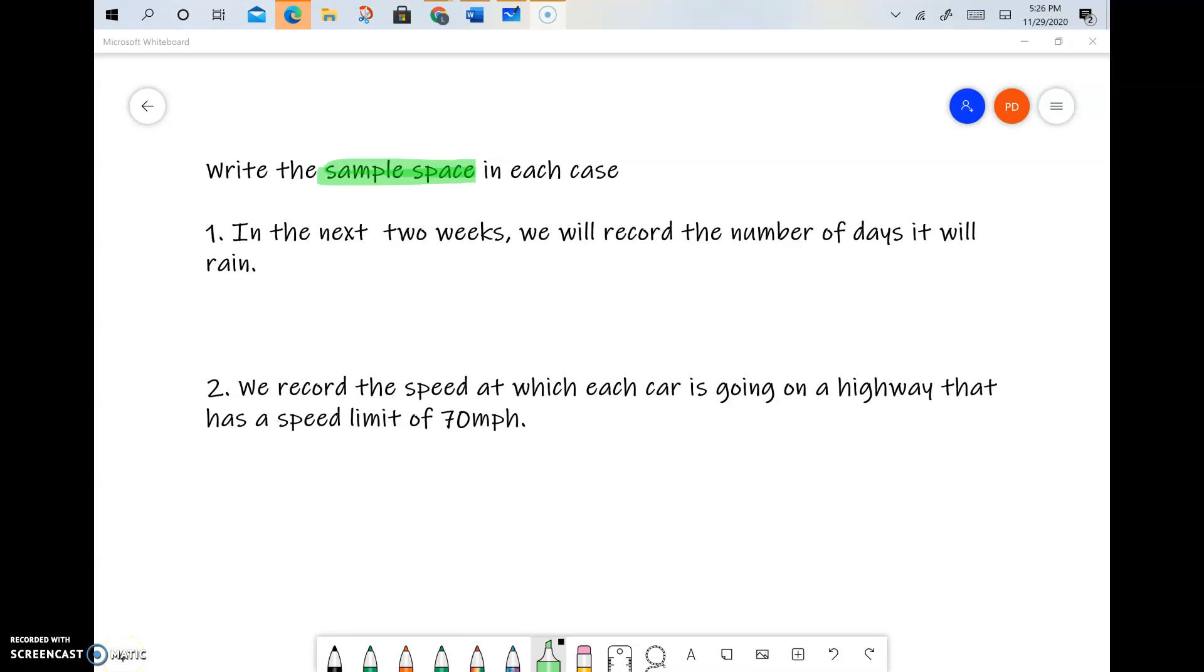We'll write the sample space in each case. Recall that the sample space is the list of all possible outcomes. So let's look at the first question. It says that in the next two weeks we will record the number of days it will rain.